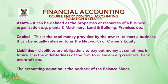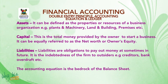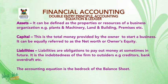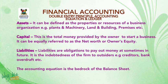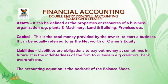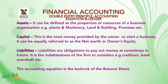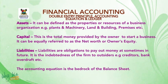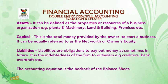Assets can be defined as the properties or resources of a business organization, e.g. plants and machinery, land and building, premises, etc. Capital is the total money provided by the owner to start a business — it can be referred to as the net worth or owner's equity. Liabilities are obligations to pay out money at some time in the future; it is the indebtedness of the firm to outsiders, e.g. creditors, bank overdraft, etc.